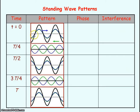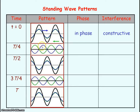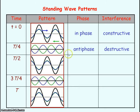At time equals zero, the blue and green waves are in phase, so constructive interference is occurring and we get maximum amplitude for our standing wave pattern. A quarter of a period later, the blue wave has moved a quarter of a wavelength to the right and the green wave has moved a quarter of a wavelength to the left. So now the two waves are in antiphase and destructive interference has occurred — the waves have cancelled each other out to give zero displacement.